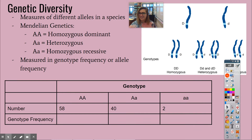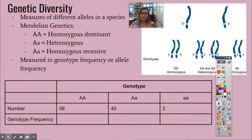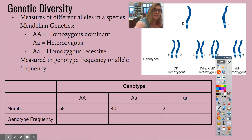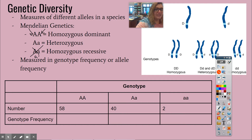The next thing we can talk about is measures of genetic diversity. We can talk about the number of different alleles in a species. Remember, we have two alleles for each gene. From Mendelian genetics: big A, big A means homozygous dominant — one allele is big A and the other is big A. Then we have heterozygous, which is big A, little a, and homozygous recessive, which is little a, little a.